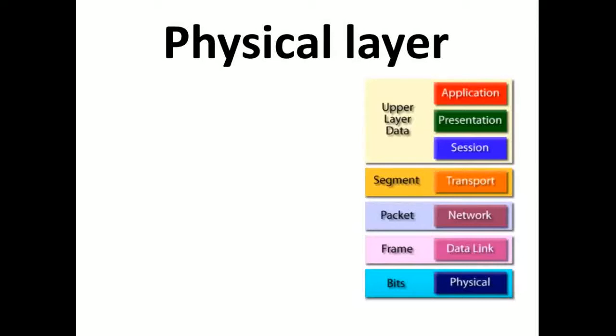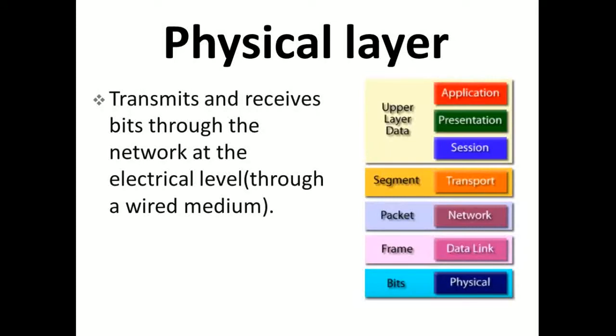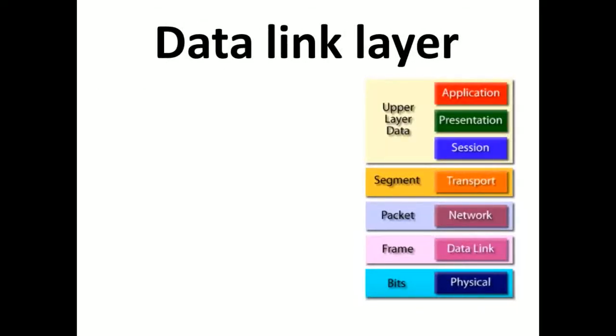The first one is the physical layer. This layer transmits and receives bits through the network at the electrical level through a wired network. Physical layer acts as an interface between the network layer and physical devices like hubs and switches. In the physical layer, data is called bits.